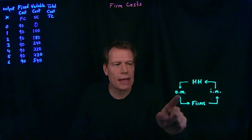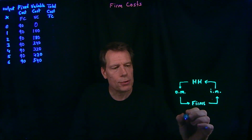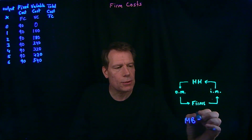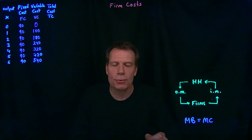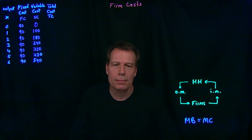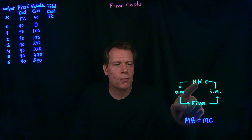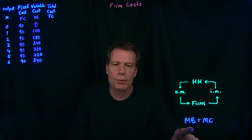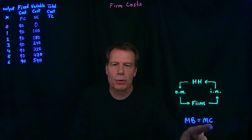We've now seen how demand curves in output markets emerge from households setting the marginal benefit of consuming goods equal to the marginal cost, where the marginal cost to the household is just the price they have to pay for the goods they consume. We've also seen that labor supply curves in input markets emerge from households setting the marginal benefit of working, which is just equal to the wage they receive, equal to the marginal opportunity cost of the time it takes to work.